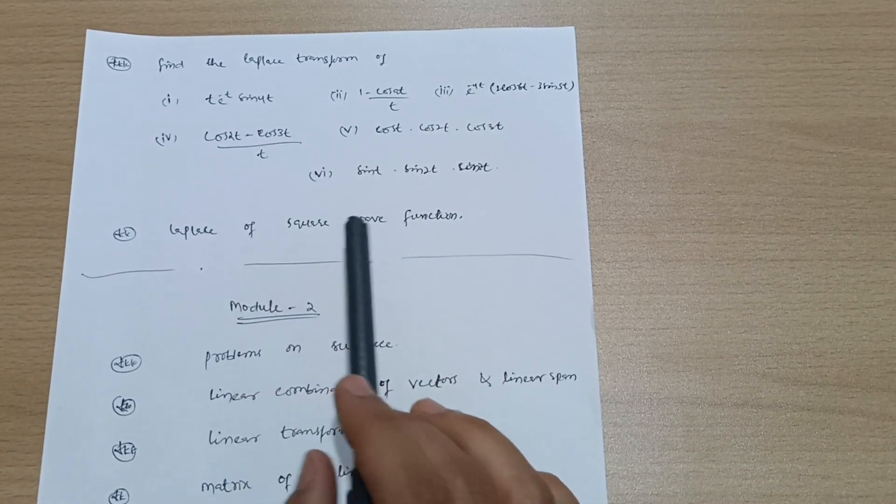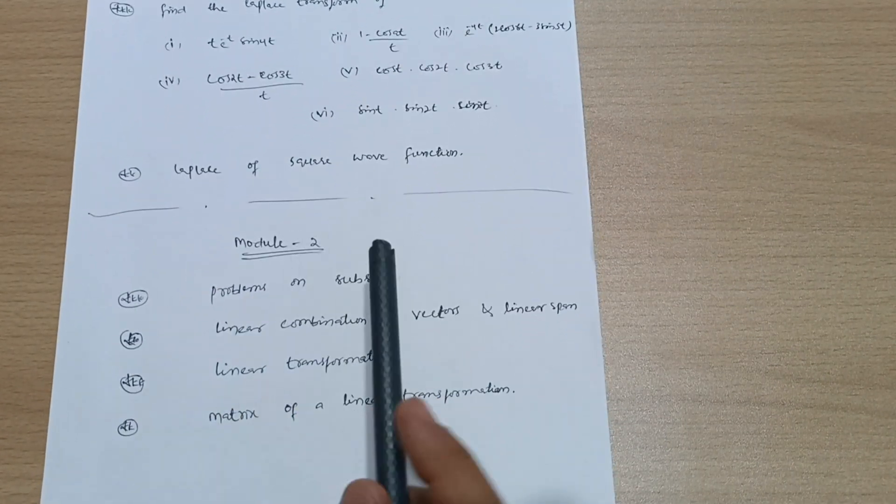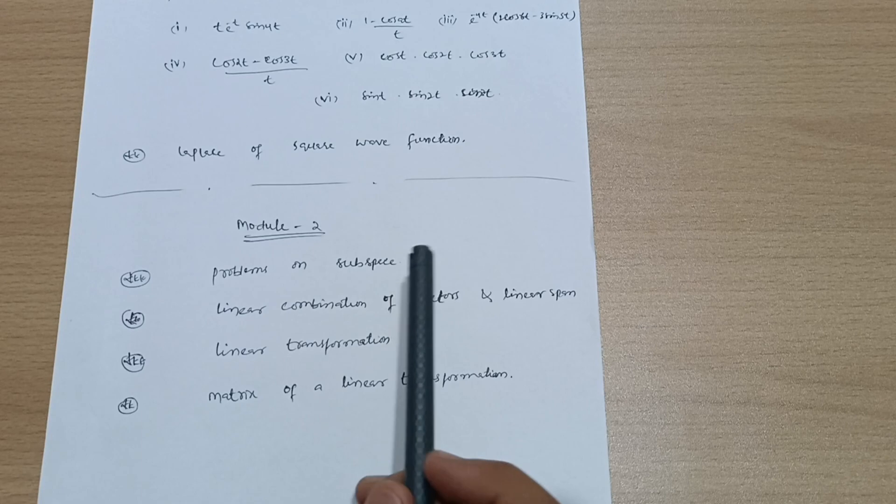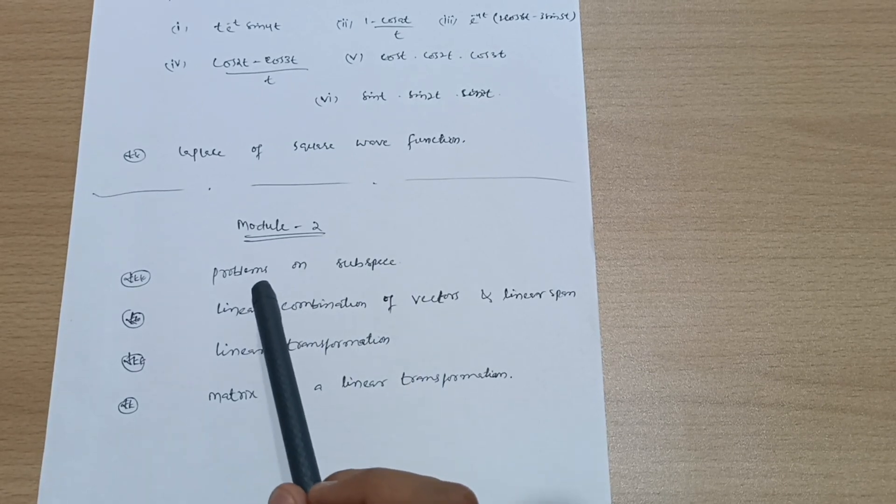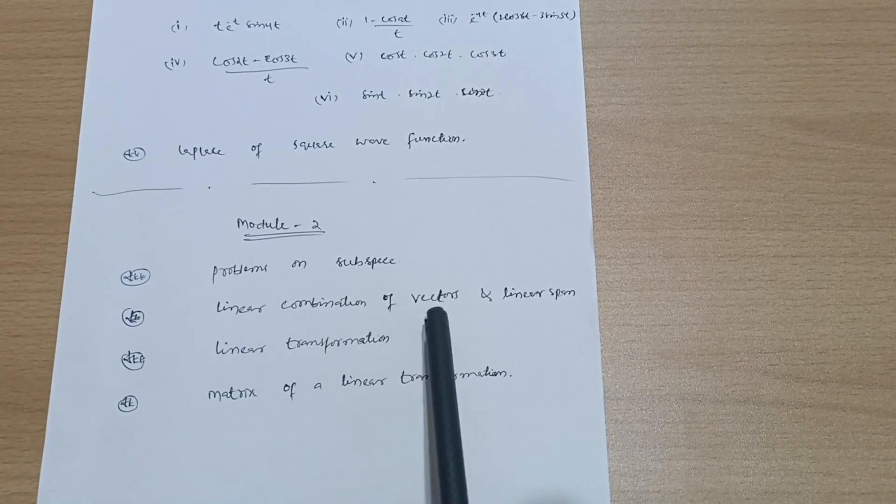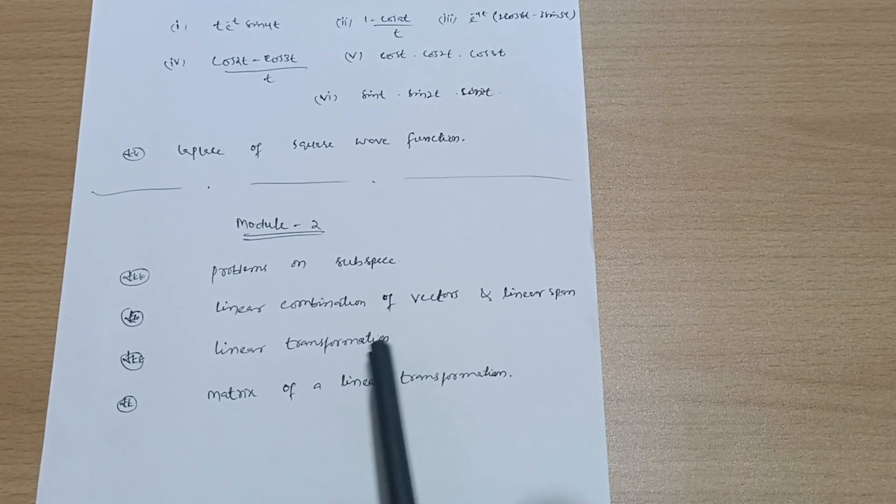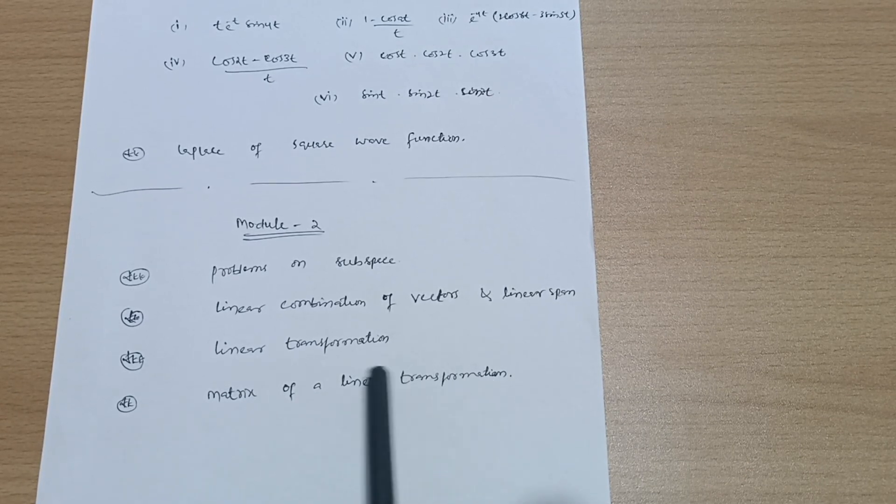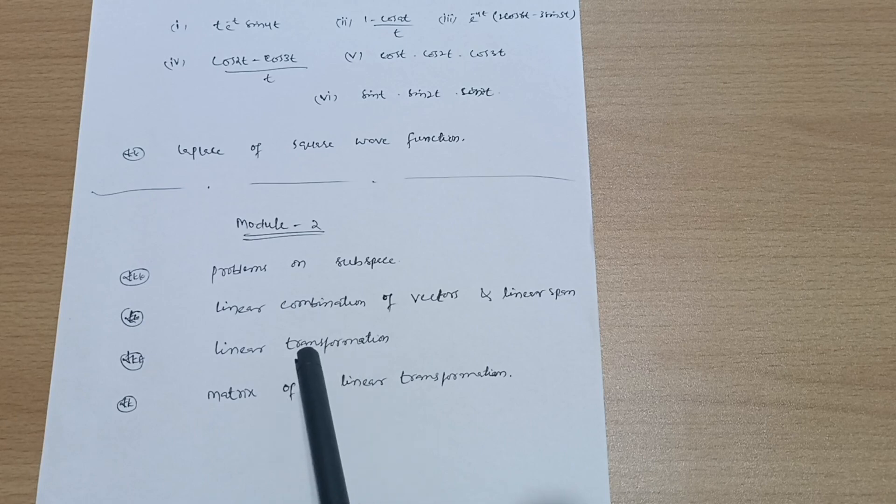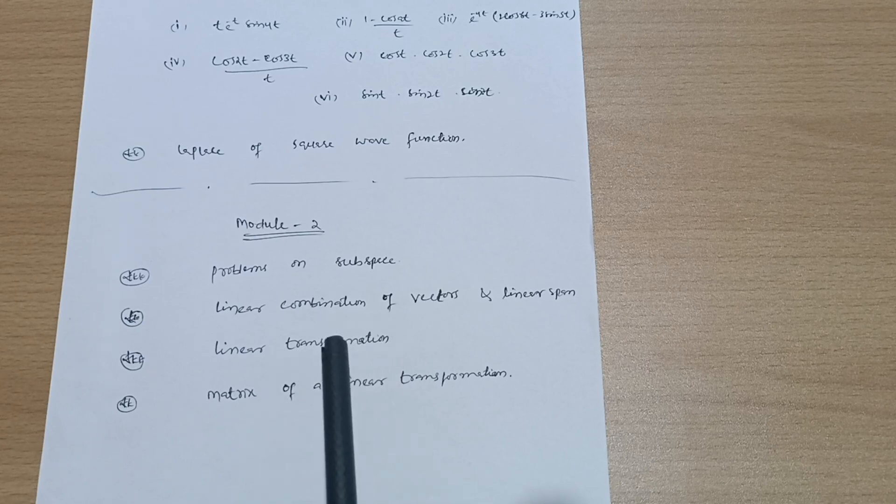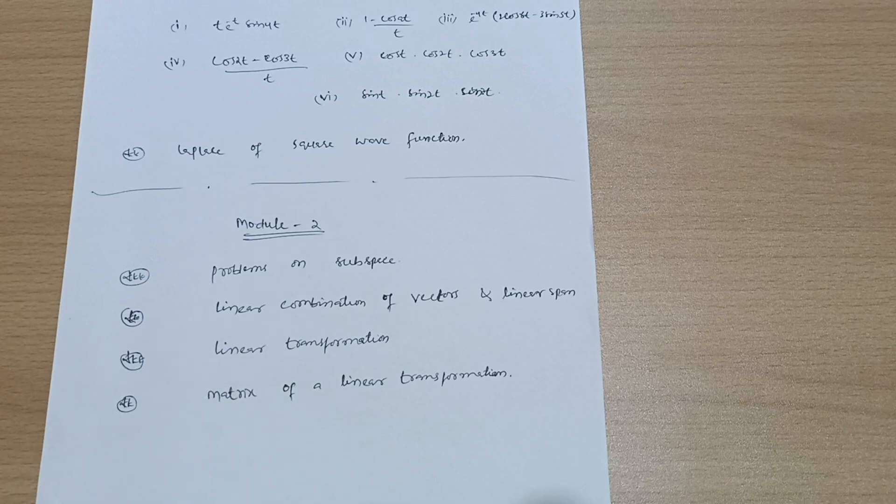Next is module second - vector subspace. You have to go through problems on subspace, linear combination of vectors, linear span, linear transformation, and matrix of a linear transformation. These four topics are most important - practice at least four problems from each concept. I hope you will cover this portion of mathematics within the given time before examinations.